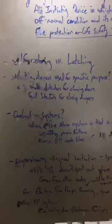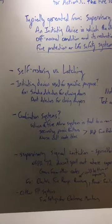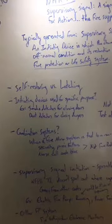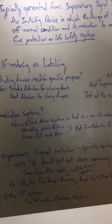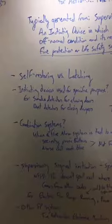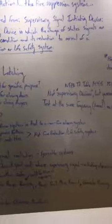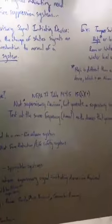So what about initiating devices that are used for specific purposes in code? Code allows us to have smoke detectors for closing doors, duct detectors for closing dampers. It's not required to trigger the fire alarm system. It can trigger a supervisory signal at a constantly attended location. But what about those? Well, NFPA 72 does clarify that for us.